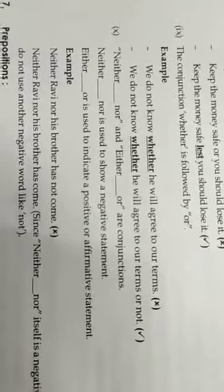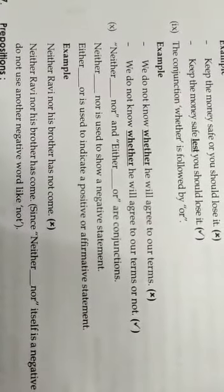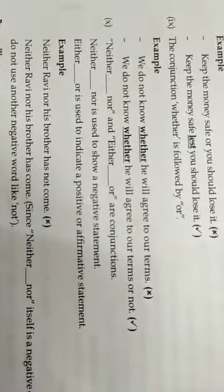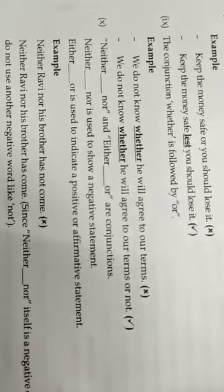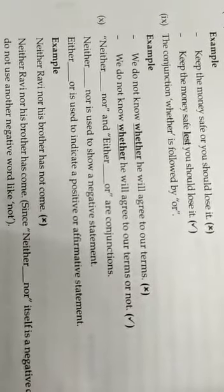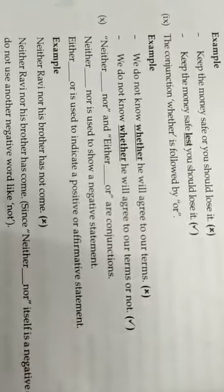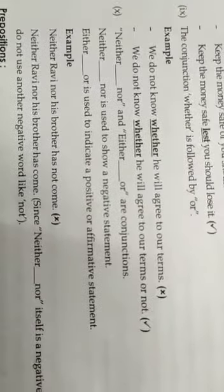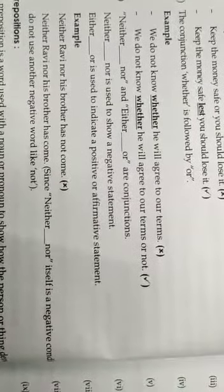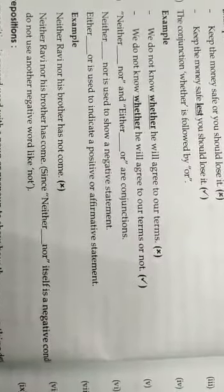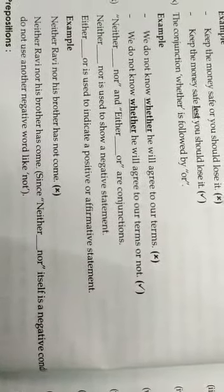And tenth one you see, neither nor and either or are conjunctions here. Neither nor is used to show a negative comment or statement and either or is used to indicate a positive or affirmative sentence. Some sentences are given here. Neither Ravi nor his brother has not come. Here in this negative sentence, neither Ravi nor his brother has come.